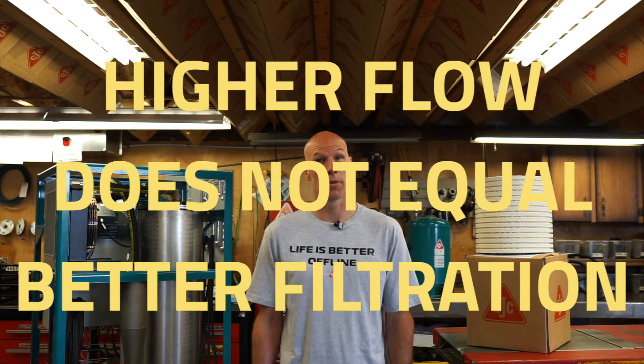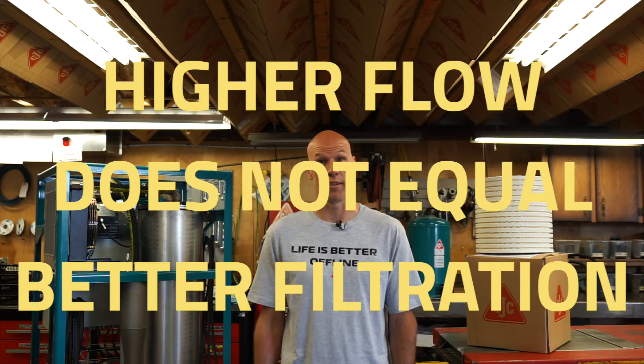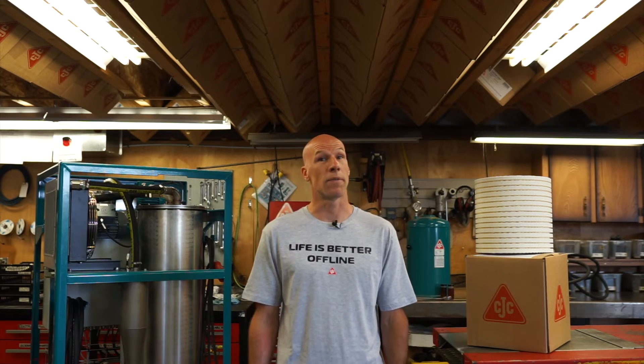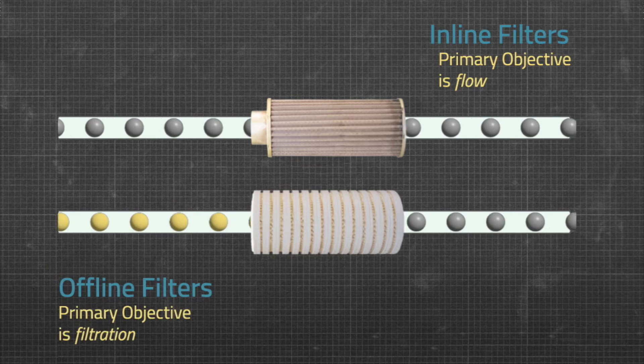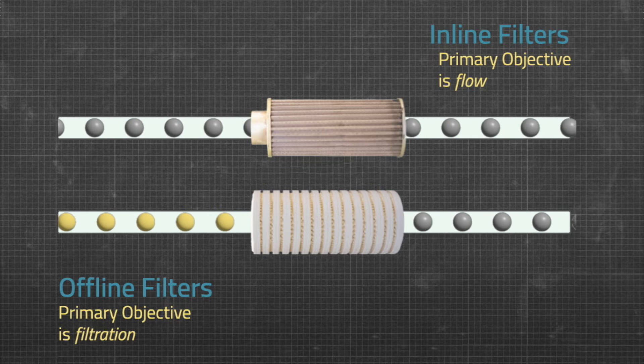Here I have to point out a common misconception: higher flow does not equal better filtration. You could make the argument that the faster you push a liter of oil through a filter, results in more liters being cleaned in a certain time. But the beauty of an offline filter is that by utilizing higher efficiency and finer filter media, you can do a much more thorough job of cleaning each liter of oil that passes through the filter.